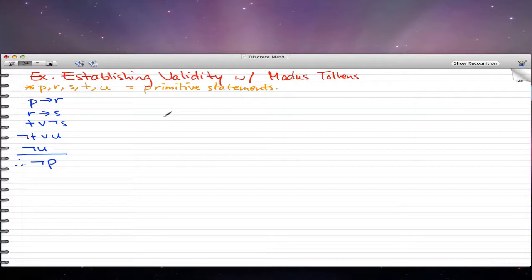Now let's do a simple example. Let's establish validity with modus tollens. In this example, we're also going to use the law of syllogism that we learned in the last video, along with some logical equivalents that we've learned or acquired from the rules or from the laws of logic that I told you to memorize. Here's all our statements, and p, r, s, t, u are primitive statements. These are our premises above the horizontal line, and that negated p would be our conclusion. So we're trying to establish the validity of this argument.